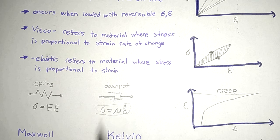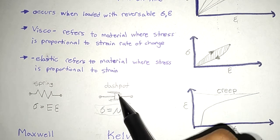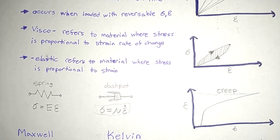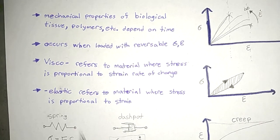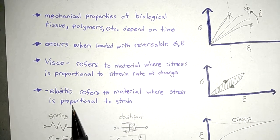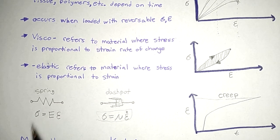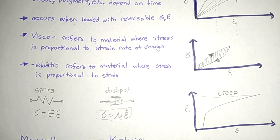The dashpot represents the viscous element. The elastic part of viscoelastic refers to materials where stress is proportional to strain — that is Hooke's law, as seen before, in terms of springs. The formula is: stress equals Young's modulus times strain. Young's modulus applies when the stress-strain graph has a linear proportional straight line.